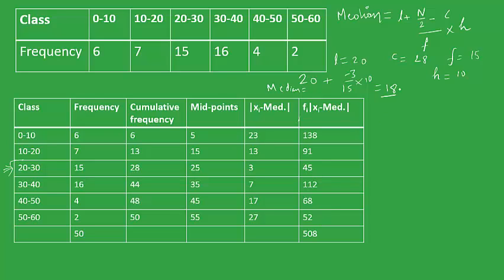We sum it all up, so the mean deviation equals sigma fi |xi minus median| upon sigma fi, which gives us 508 upon 50. So the answer comes out to be 101.6.